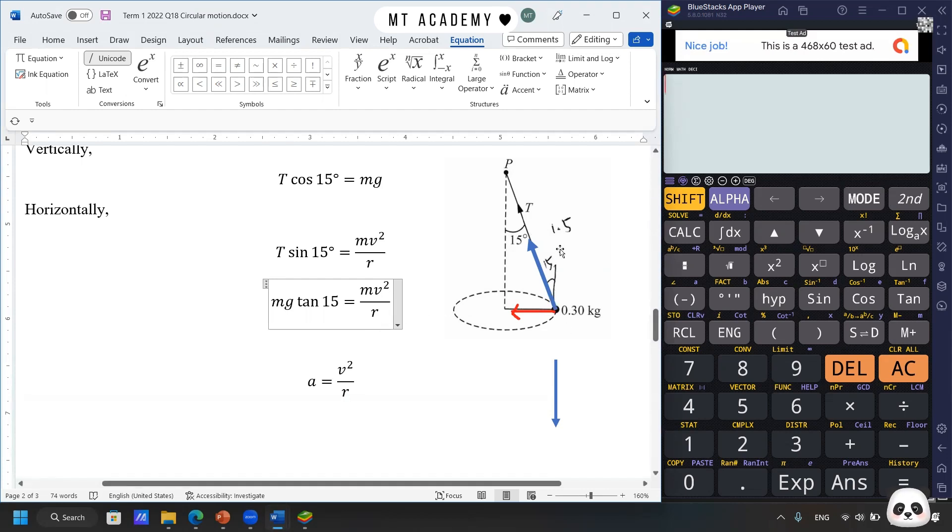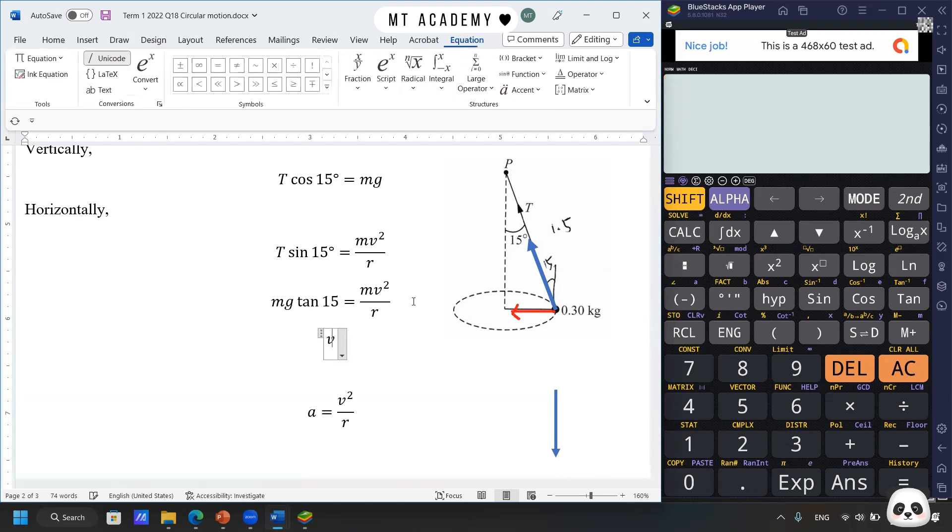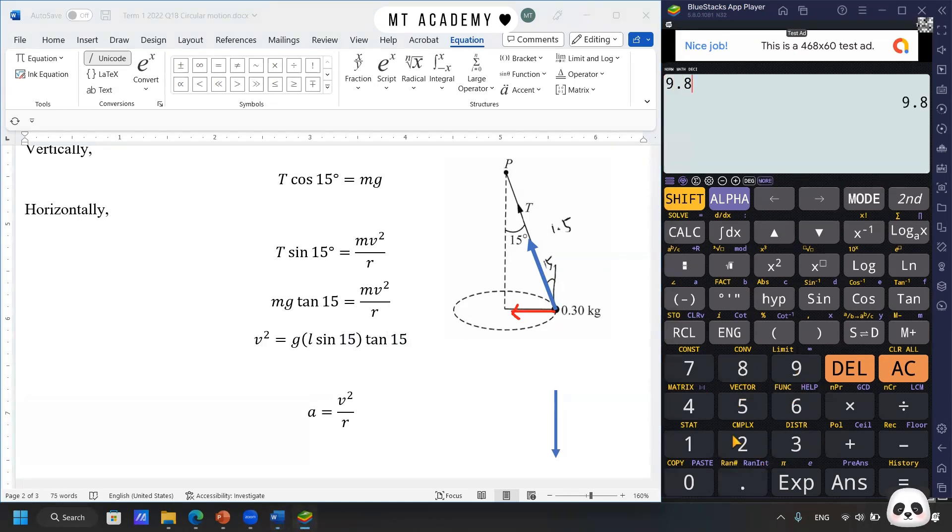So here we can rearrange the equations that v² will be equal to g multiplied L sin 15°, and that's the radius, multiplied tan 15°. So now we can do the calculation. G times 1.5 times sin 15° times tan 15°.